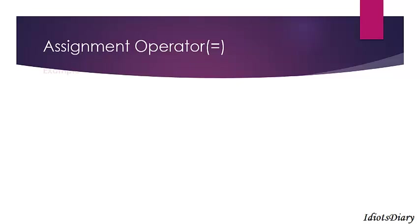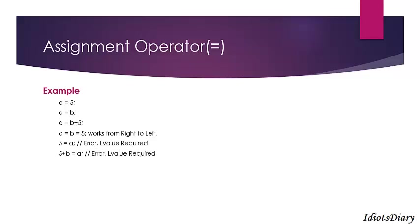Let's continue with the assignment operator. The assignment operator is used to move a value into a variable, or the value of one variable into another variable, or the result of an expression into a variable. The assignment operator works from right to left. For example, a = b = 5: the 5 is moved to b first, then the value of b is moved to a. In the expression 5 = a, an error occurs called 'l-value required', because a constant cannot be changed.